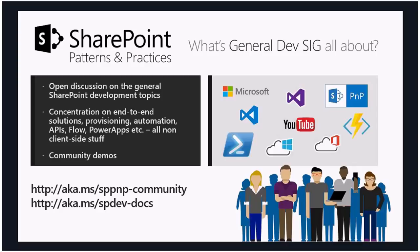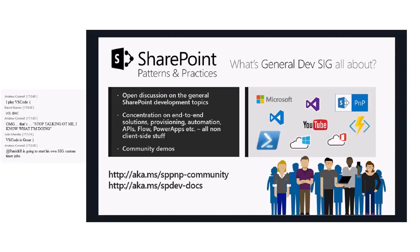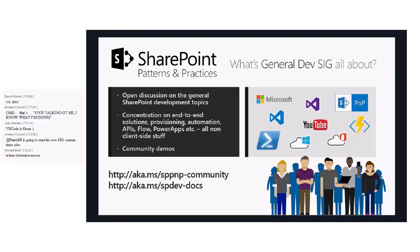We have two different community special interest group calls. One is for SharePoint Framework and JavaScript development, and this one covers all the other topics. On top of these two special interest groups, which meet bi-weekly on Thursdays — basically once a week on Thursdays at 7am Pacific time — we also have a monthly community call coming up next week. You can choose to join based on the agenda, and I'll show the agenda for next Tuesday today.